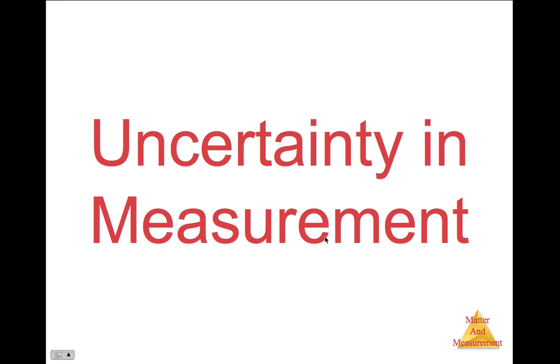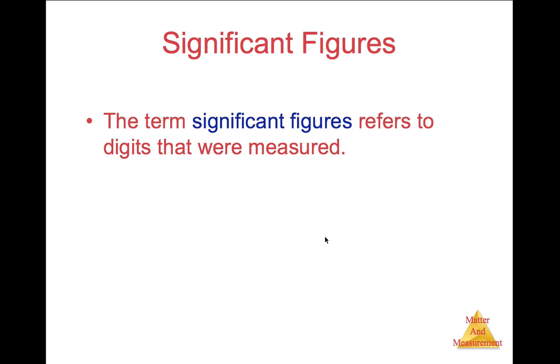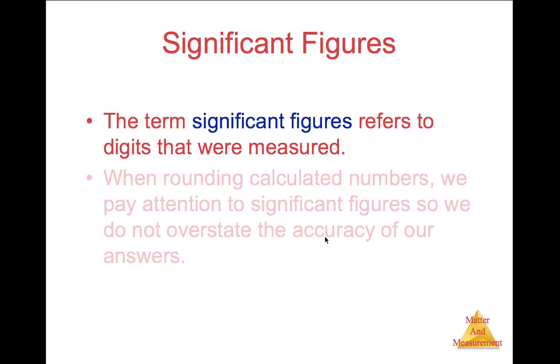Let's look closer at the uncertainty in measurement now that we know some of the derived units and some of the standard international units that we'll be using to measure. To communicate how good our measuring device is, we use something called significant figures. Significant figures refer to the digits that were measured.